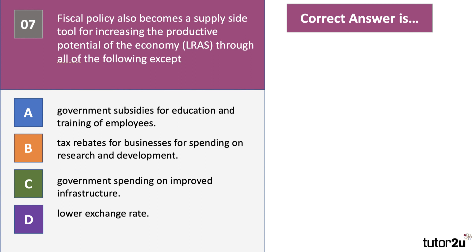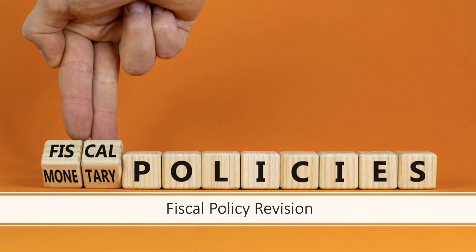The right answer is the exchange rate. Subsidies for education and training can improve the human capital of the workforce; tax rebates for R&D can drive innovation; and improved spending on infrastructure is critical to long-run aggregate supply. A fall in the exchange rate is not part of fiscal policy — it is indeed monetary policy. Seven questions on fiscal policy — hopefully you did well. Some tough, challenging questions, and I hope you found this exercise useful. Stay safe, stay focused, and see you again soon.